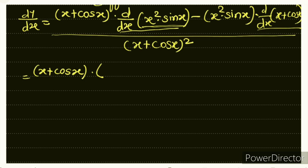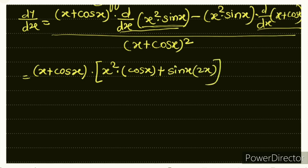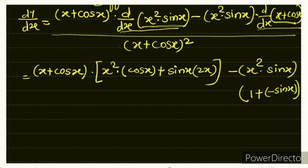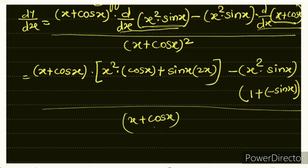Applying u·v rule: d/dx(x²·sin x) = x²·cos x + sin x·2x. For d/dx(x + cos x): sum of functions, so derivative is 1 + (−sin x) = 1 − sin x. So we have: (x + cos x)·(x²·cos x + 2x·sin x) − (x²·sin x)·(1 − sin x), all over (x + cos x)². Also note: every step, keep writing the denominator — don't forget it.